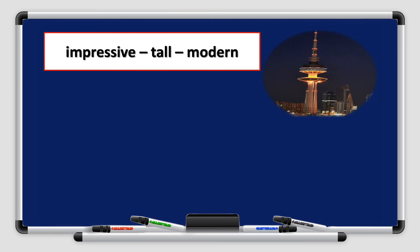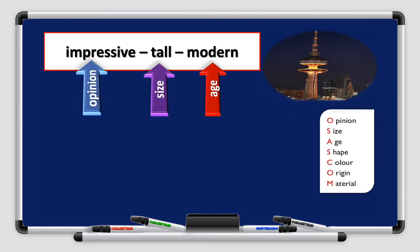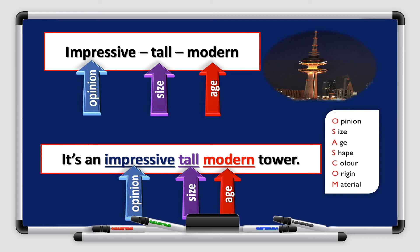Number three. You have impressive, tall, and modern building. Impressive is an opinion. Tall is size. Modern, so we're talking about age. Let's organize the adjectives. We can place them in the sentence to make a sentence like, it's an impressive tall modern tower. We started with opinion, size, followed by age.